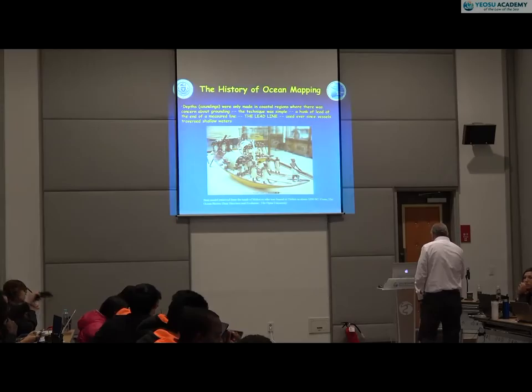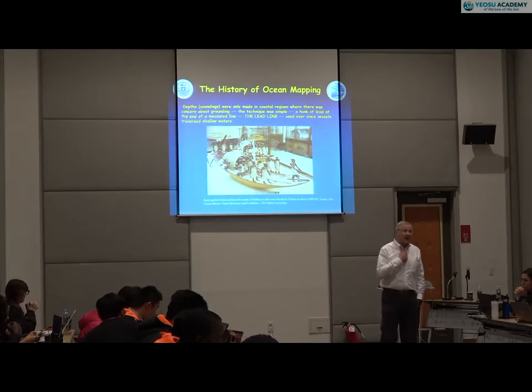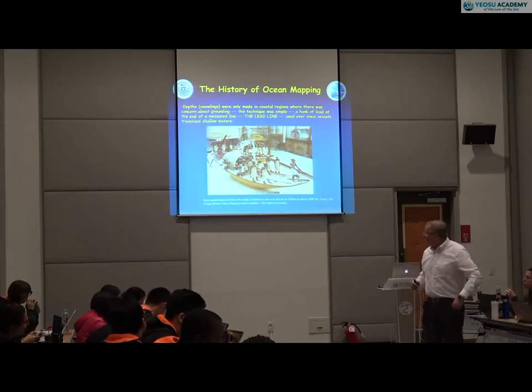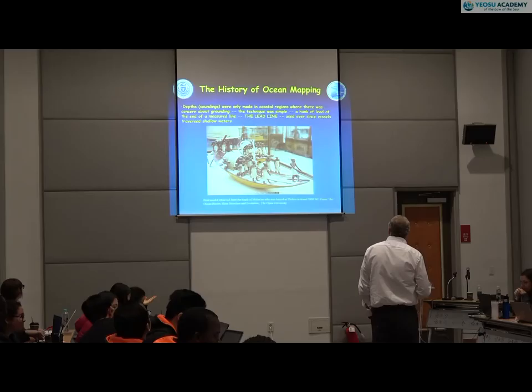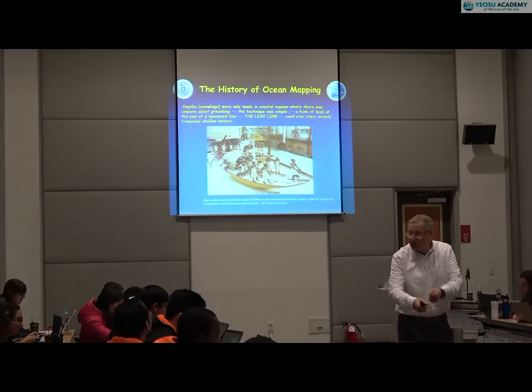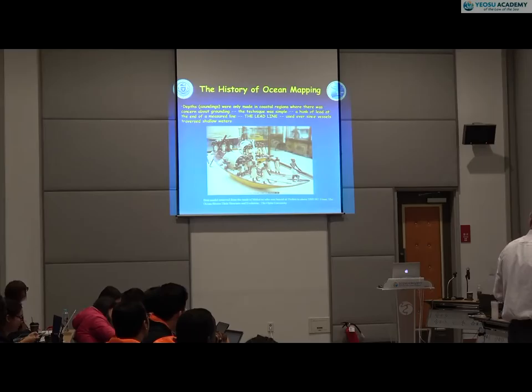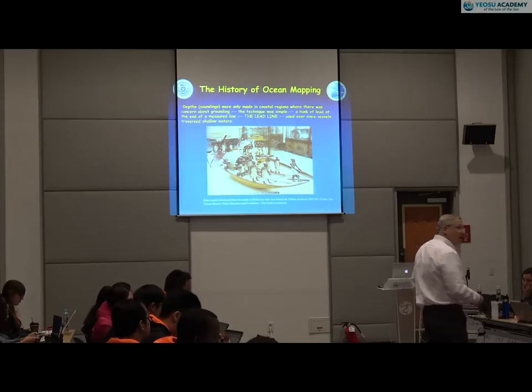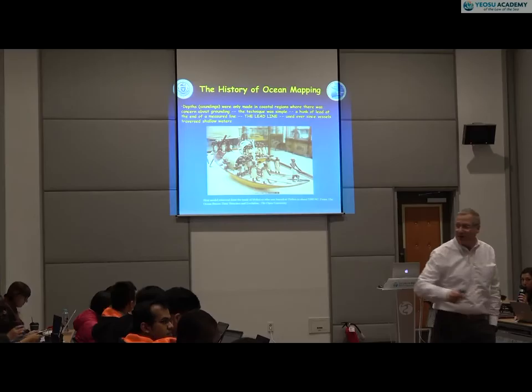Let's start by looking at the issue of bathymetry — how do we measure the depth of the ocean? People have been measuring the depth of the ocean for a long time. There is a statue found in an Egyptian tomb from 2000 BC. That figure has a hunk of lead or a rock at the end of a string, measuring how deep it is. So in 2000 BC, they were measuring depth with what we call a lead line — a hunk of lead at the end of a rope — and in shallow water it could be pretty accurate.